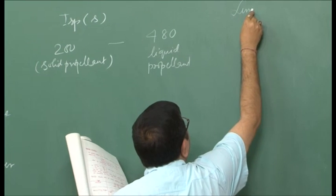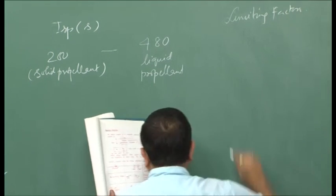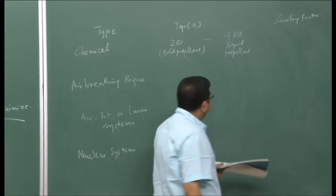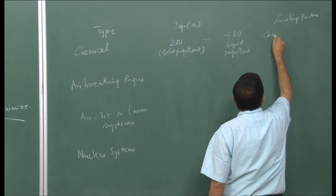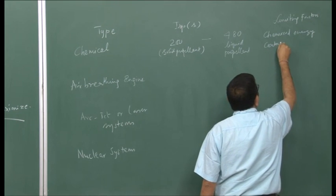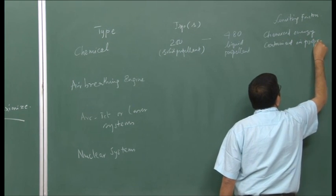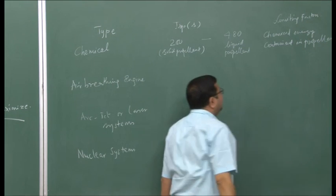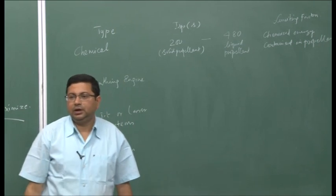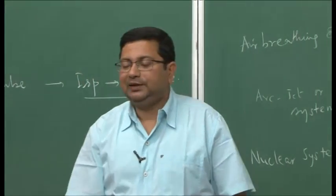This is the range of specific impulse we can obtain for chemical rockets. Chemical rockets, both liquid and solid propellant, are essentially limited by the chemical energy in the propellant. Every propellant has a maximum chemical energy associated with it, so we cannot possibly extract more energy than that. Therefore, the specific impulse is limited by that factor.